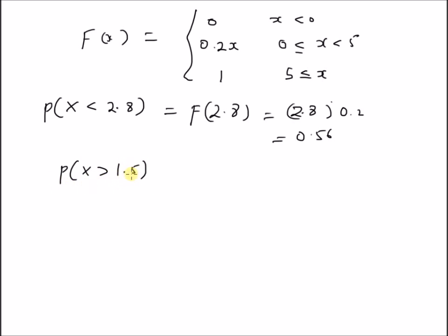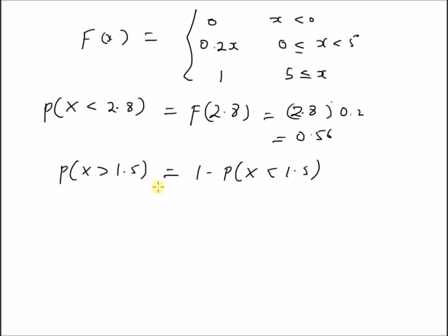Now we want to find P(X > 1.5). Any probability greater than a value equals 1 minus the probability of that value being less than x. So P(X > 1.5) = 1 − P(X < 1.5). This formula comes from the complement rule: if event A is X < 1.5, then the complement is X > 1.5, so P(complement) = 1 − P(A).